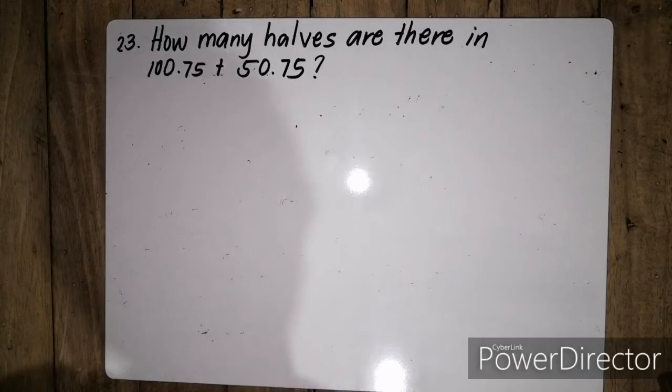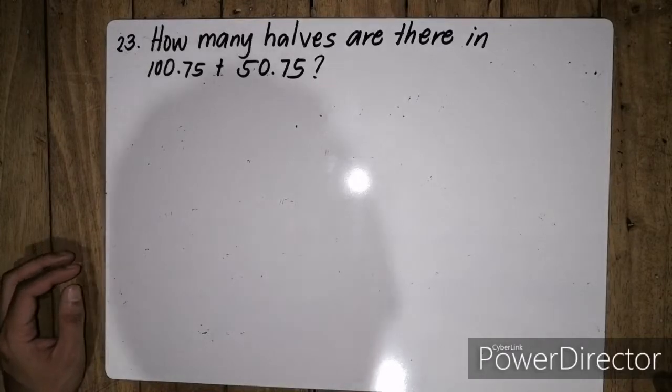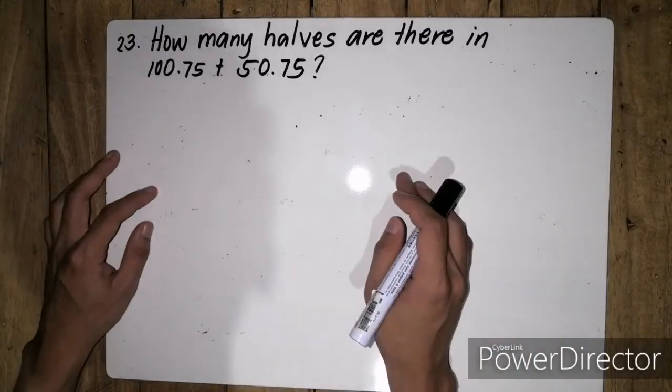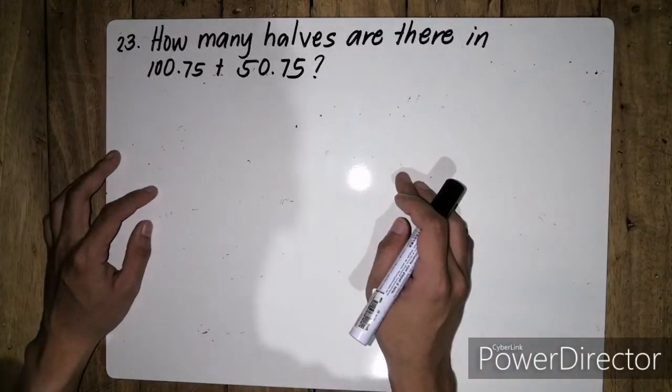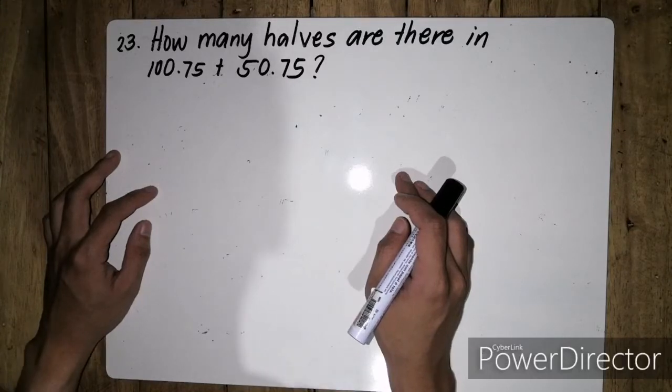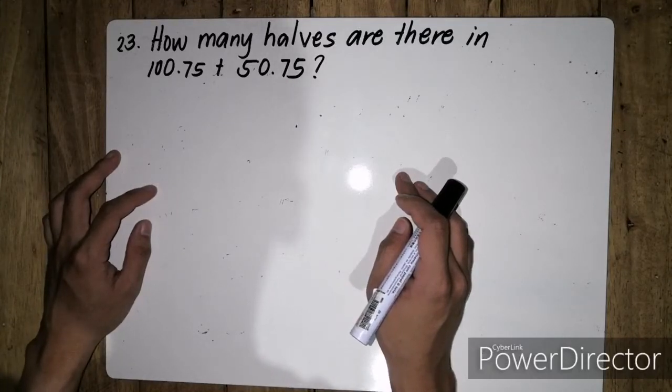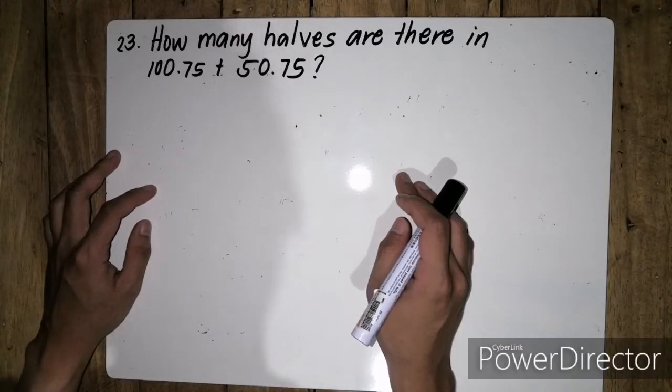Hello there Matlovers, for the 2019 MTAP Reviewer MMC for Grade 5 Elimination. We're now on number 23 of Grade 5 Elimination. For question number 23: How many halves are there in 100.75 plus 50.75?